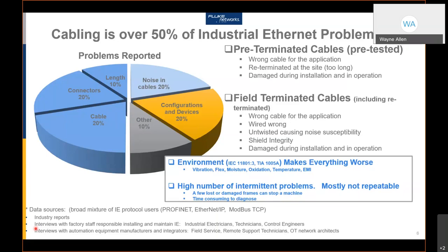Going back to where we were: cabling is over 50% of industrial Ethernet problems, whether pre-terminated or field-terminated. We are seeing problems with length, connectors, or the cable type being used. One of the key areas of problems is noise in the cables — and noise entering a cable could actually be a cabling problem itself, as I'll share later.